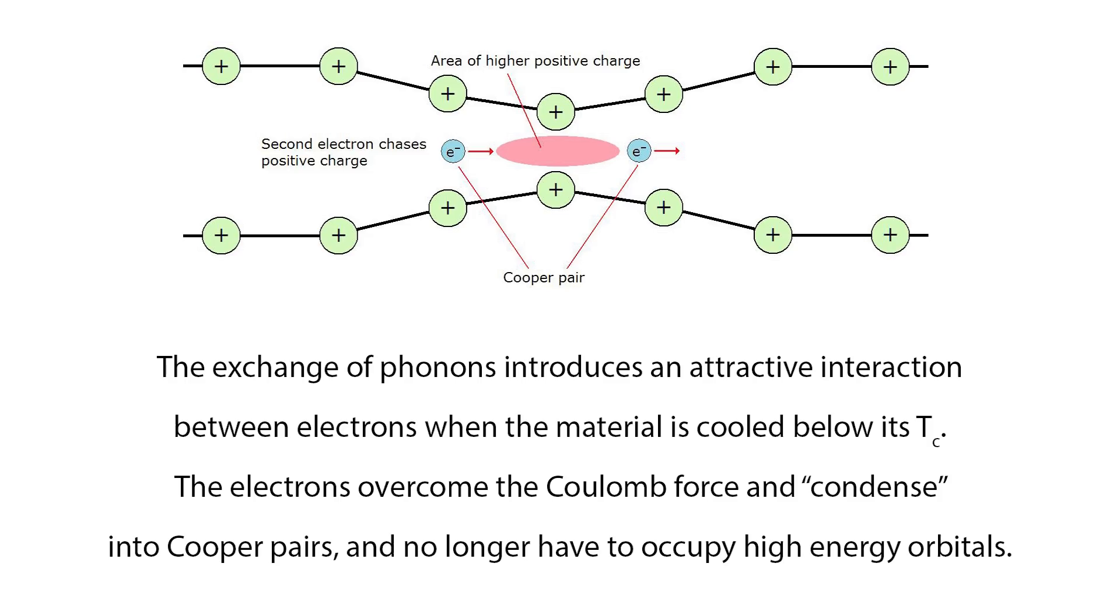The key idea introduced by the BCS theory was that the exchange of phonons, quantum quasiparticles of energy, introduces an attractive interaction between electrons when the material is cooled below its critical temperature. This attraction is energetically favored, and can overcome the Coulomb force pushing the electrons apart. The electrons then become Cooper pairs, bound electron pair states that no longer have to occupy higher energy states. These Cooper pairs are said to have condensed in velocity space into a macroscopic quantum state, and this condensation is the reason for superconductivity.